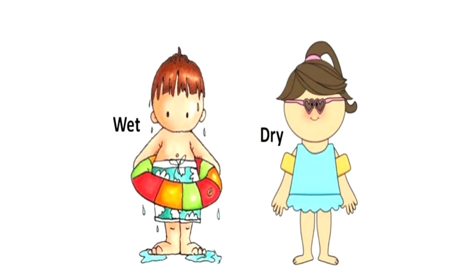In this picture you can see that both the children are wearing swimming costumes. The boy is wet — you can see the water all over him, because he has just come out from the swimming pool. The girl is not wet because she has still not entered the swimming pool, so she is dry. So these are the various examples of the concept wet and dry.